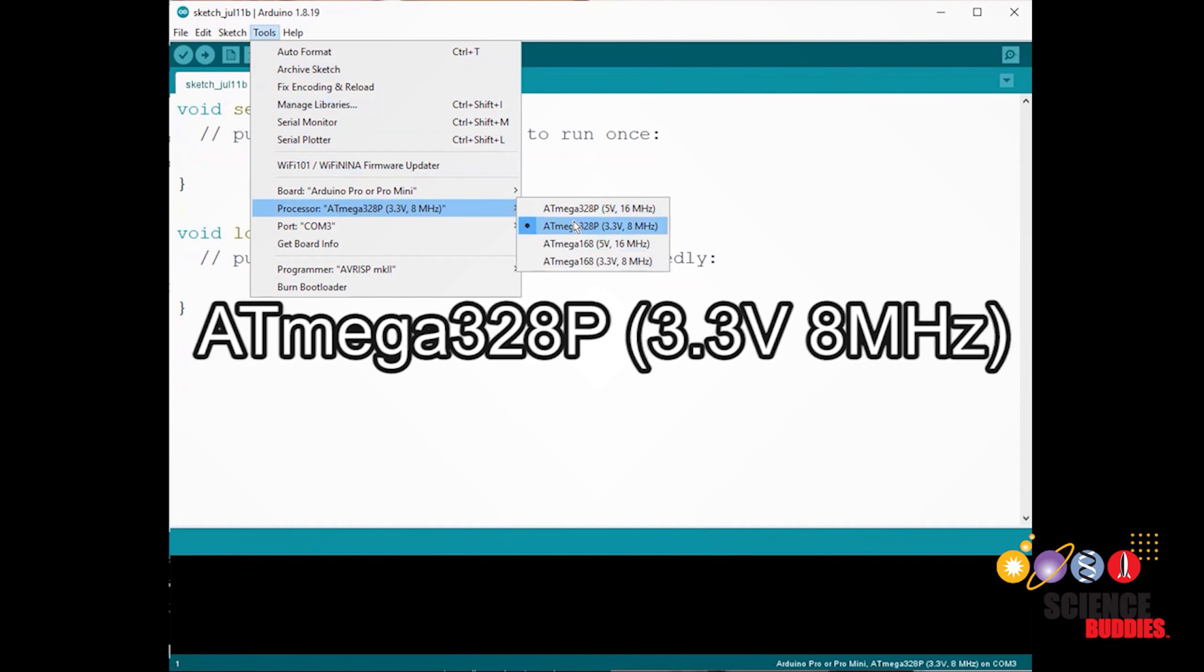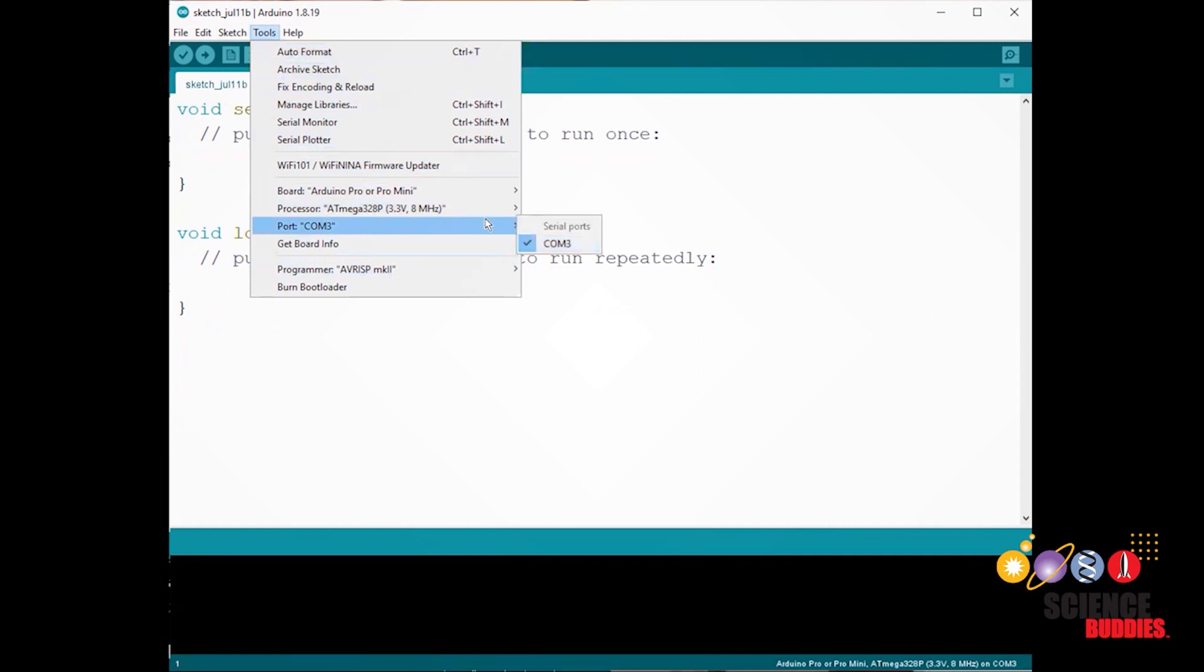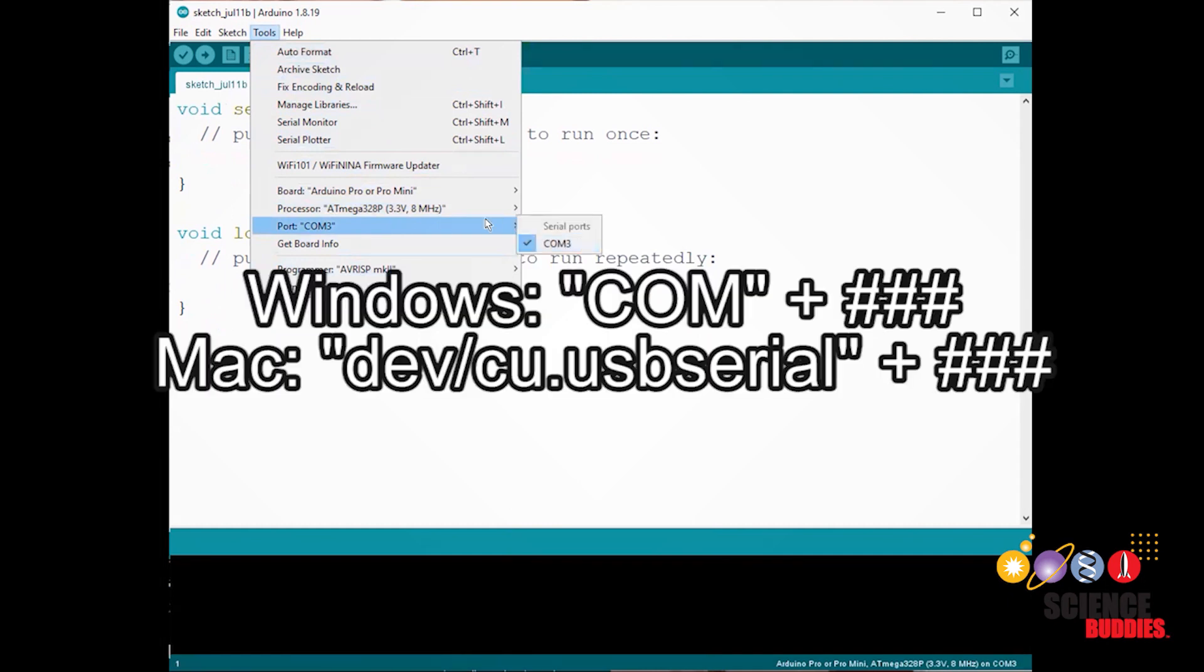Finally, it's time to select your port. This should be COM followed by a series of numbers, and it will be different for you if you have a Mac. If you have a Mac, it would be this followed by a series of numbers.